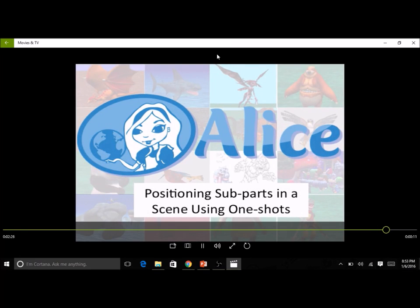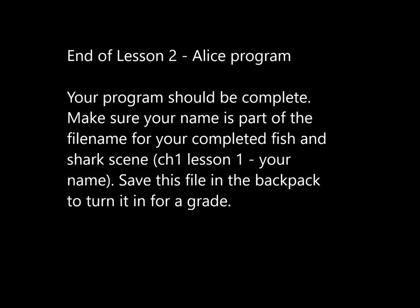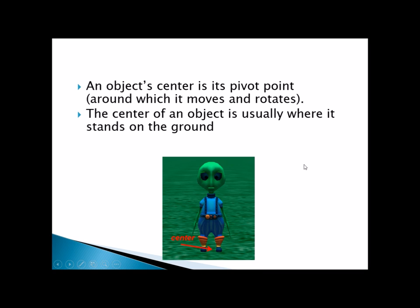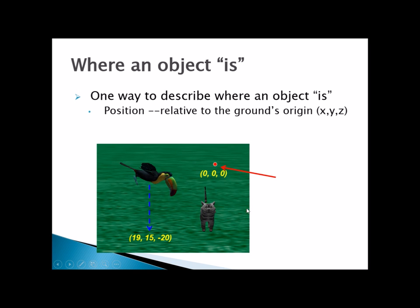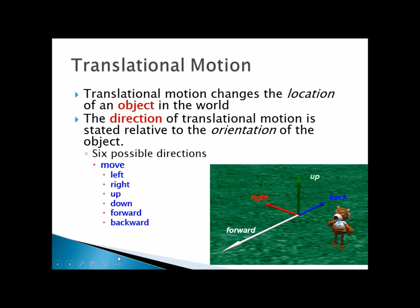In this video, we looked at how to position the subparts of an object in the scene editor using one-shot procedures. As a review, the object's center is usually on the ground. We can describe an object's position with X, Y, and Z coordinates — that's forward and back, left and right, and up and down. An object can move in six different directions.